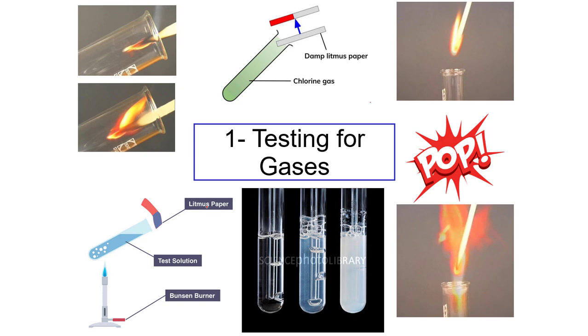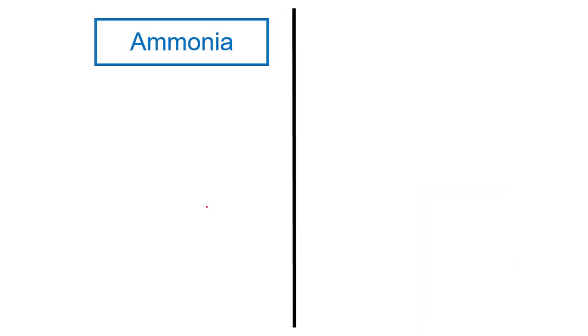Assalamualaikum, hello everyone, hope everyone is doing well. In this video I'm going to revise testing for gases, cations and anions. Let's begin. The first one is ammonia gas. Ammonia gas has alkaline properties.